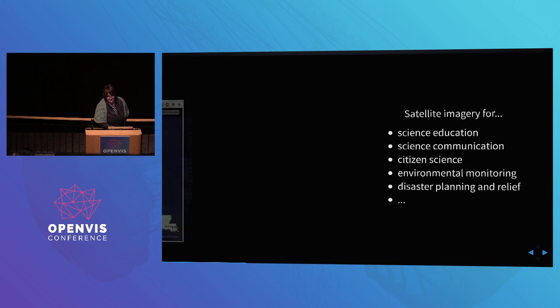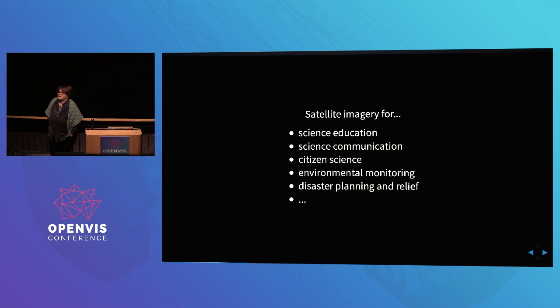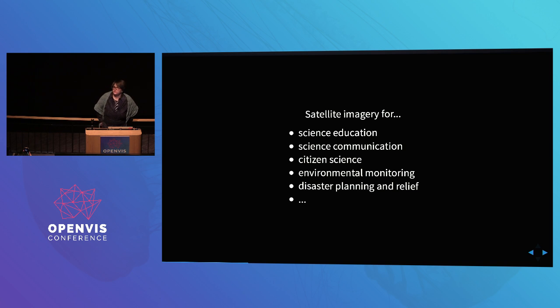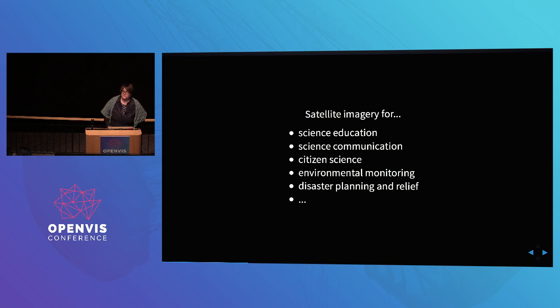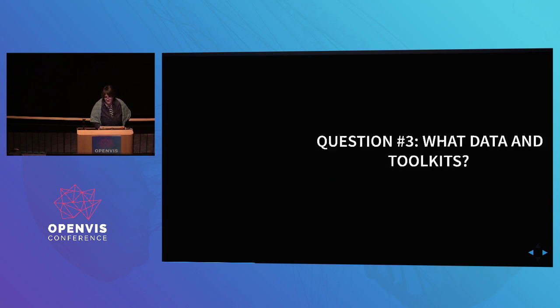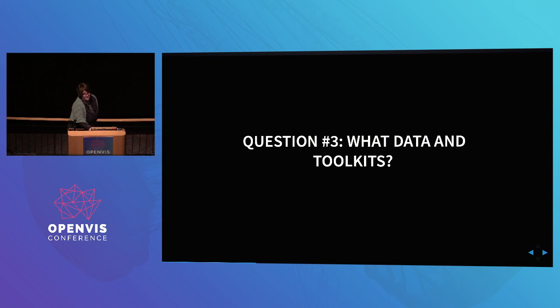That tells me that not just science educators and communicators use science imagery. There might be citizen scientists, people who want to monitor their urban or rural environment, their town, their city, their state - industrial development, agricultural development - does my city get more parks? Some of us help plan for disasters; I happen to work with the fire service. So this brings me to my third question: what data and toolkits do we actually have to do this? That Louisiana investigation credited NASA, USGS, and Landsat as its source - so that tells you where to go.